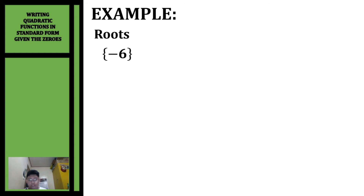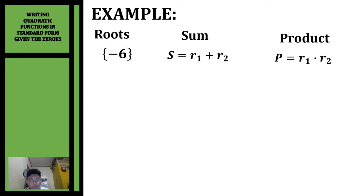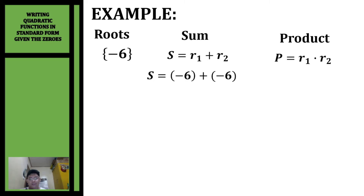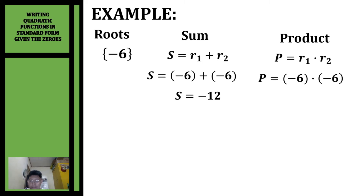Let's have another example. We're going to write the quadratic function given the root negative 6. When we encounter only one root given, we expect two of the same root — this is a situation where the vertex is along the x-axis. So we have two roots: negative 6 and negative 6. Adding: negative 6 plus negative 6 gives a sum of negative 12. Multiplying: negative 6 times negative 6 gives a product of 36.